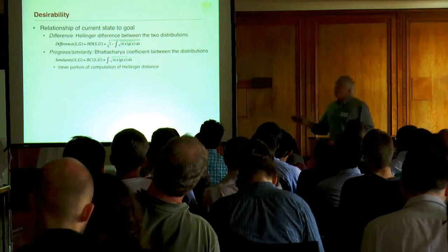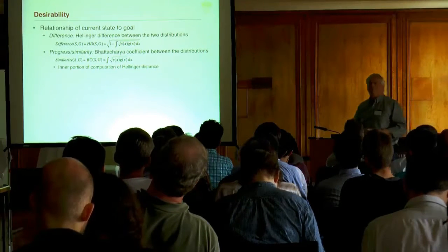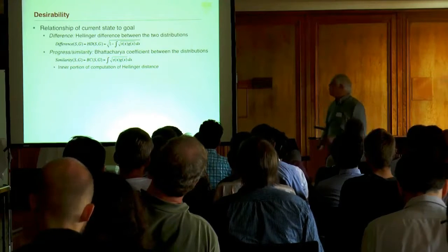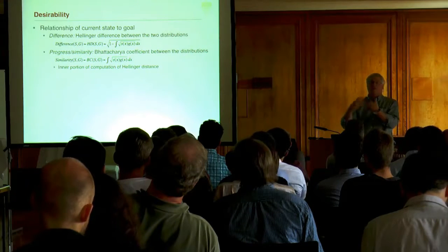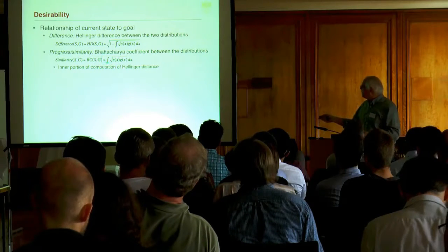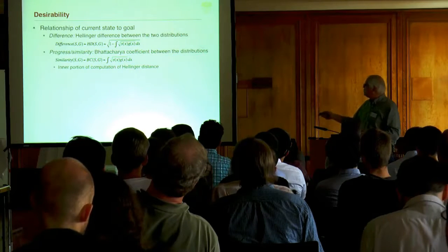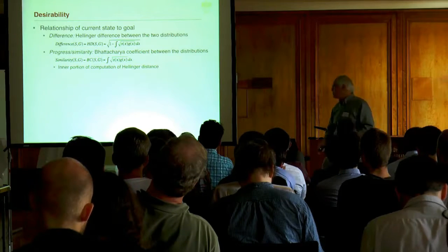Let's go on to desirability. Here what we're looking at is how close is our current situation to our goal. We're going to have a distribution of the state, a distribution of the goal, we're going to use the Hellinger difference to compare those and get some notion of distance to the goal. We can use the Bhattacharya coefficient, which is this inner portion of the Hellinger difference, to give us similarity or progress towards the goal.